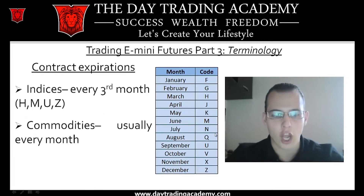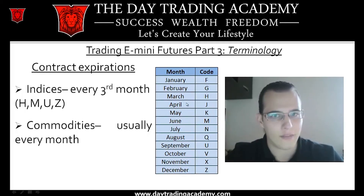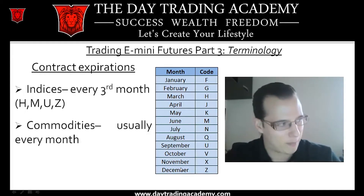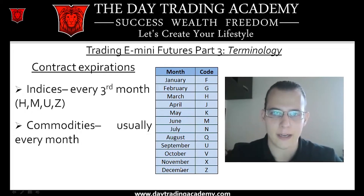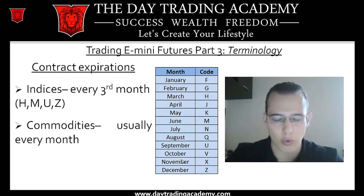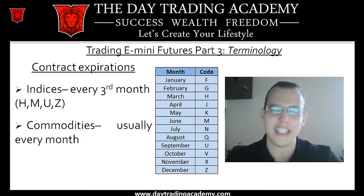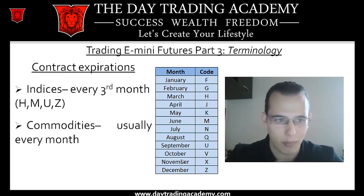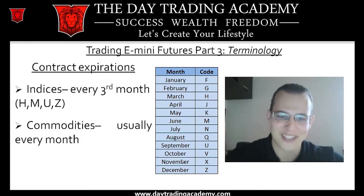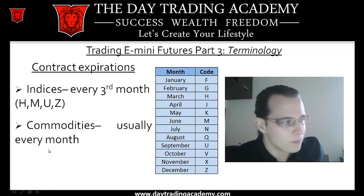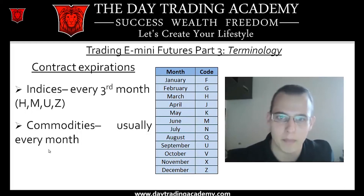Every contract month has a specific letter or code. The indices generally expire every third month: March, June, September, and December. When you're going to trade these financial products, you're going to need to use these codes. Some trading platforms make it a little bit easier for those of us who are brand new or don't want to get into the fancy code. Commodities like oil, gold, silver, palladium, and platinum generally expire every month because they need to be delivered.